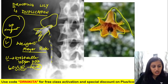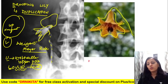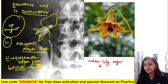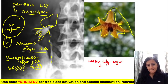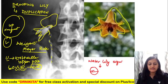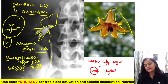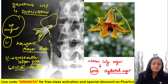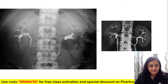Do not confuse drooping lily with the water lily sign. The water lily sign — where a lesion with a lily floating on water is seen — is associated with hydatid cyst.